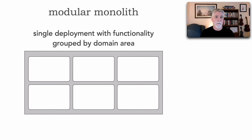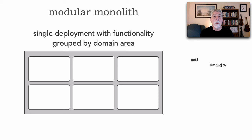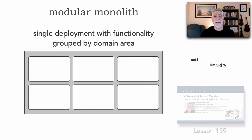Now let's move to the modular monolith. The shape of this architecture style is a single deployment unit with functionality grouped by domain area rather than by technical categories. Contributing to this shape are low cost and really good simplicity — great for a startup, an initial application, or ones that don't have a lot of time and budget to get out the door. More information is in lesson 159.